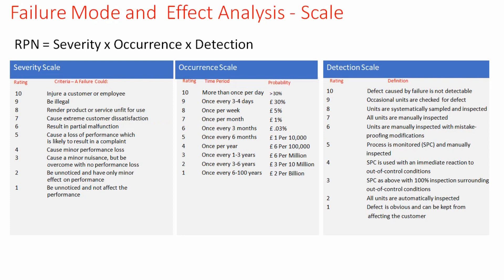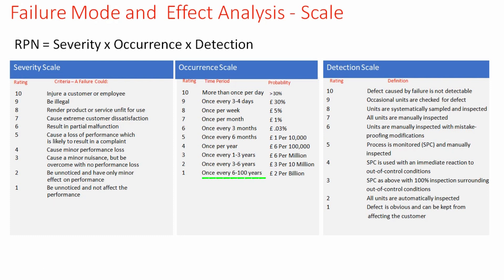For a severity rating of 1, the failure would be unnoticed and not affect performance. Similarly, for the occurrence scale, if the failure mode is occurring more than once per day, a rating of 10 is given. If the failure mode is occurring once in 6 to 100 years, a rating of 1 is given.